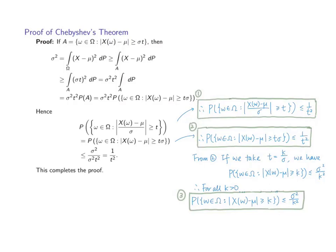We can also have the third format of presenting Chebyshev's theorem. If we refer to the second presentation and notice that t is any positive value, if we substitute t to be another positive value k divided by sigma, we will be able to change this inequality into a new format where k is any positive real number. Therefore, we have the third presentation of Chebyshev's theorem, which states that for all positive values k, the probability of the event containing all elements from omega which satisfies that the absolute value of x(omega) minus mu is greater than or equal to k is always less than or equal to sigma squared over k squared. These three presentations of Chebyshev's theorem are the same and give us the same implications.